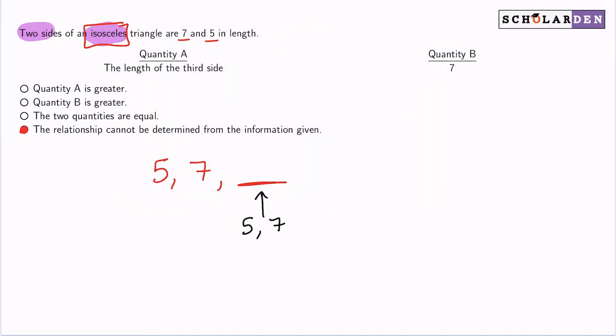Because again, if it's five, isosceles. If it's seven, isosceles. So it's either five or seven. But there's no more information to let us know which one it might be.